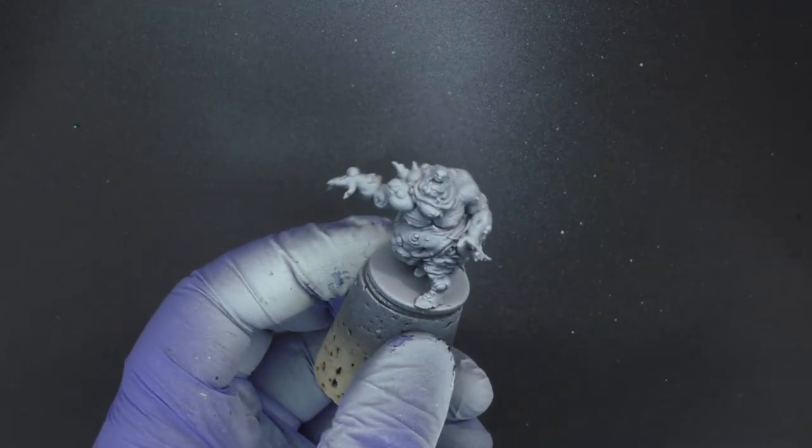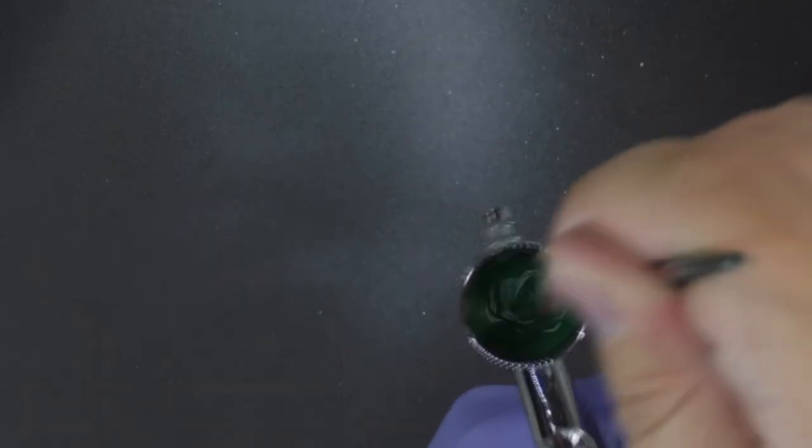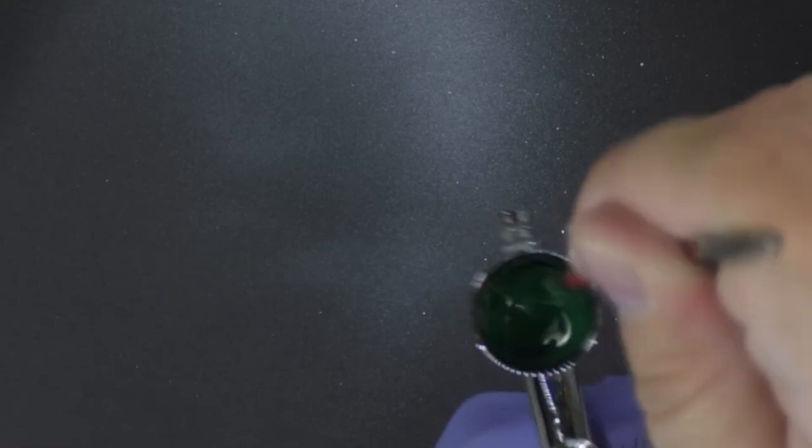In this video I'm going to talk about how I airbrush over Zenithel highlighted miniatures. We're going to start off this model with angel green, a very dark green color from Army Painter.